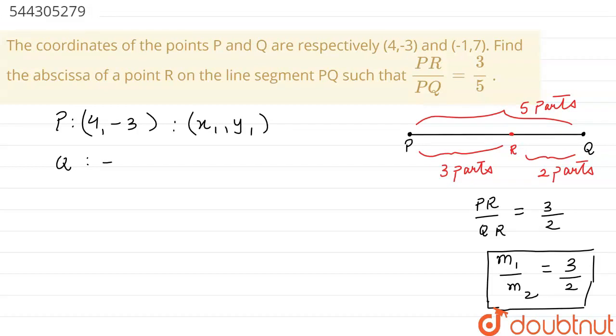And the second point Q, which is (-1, 7), will work as x2, y2. Now, I'm applying the section formula. From section formula, I can find the x or even the y-coordinate of the point R.